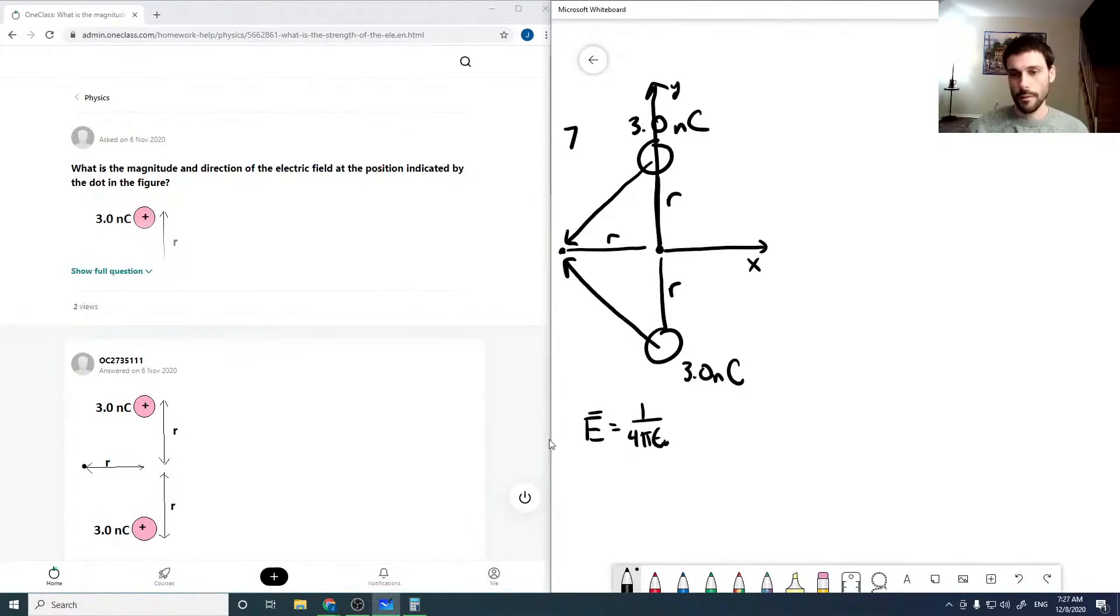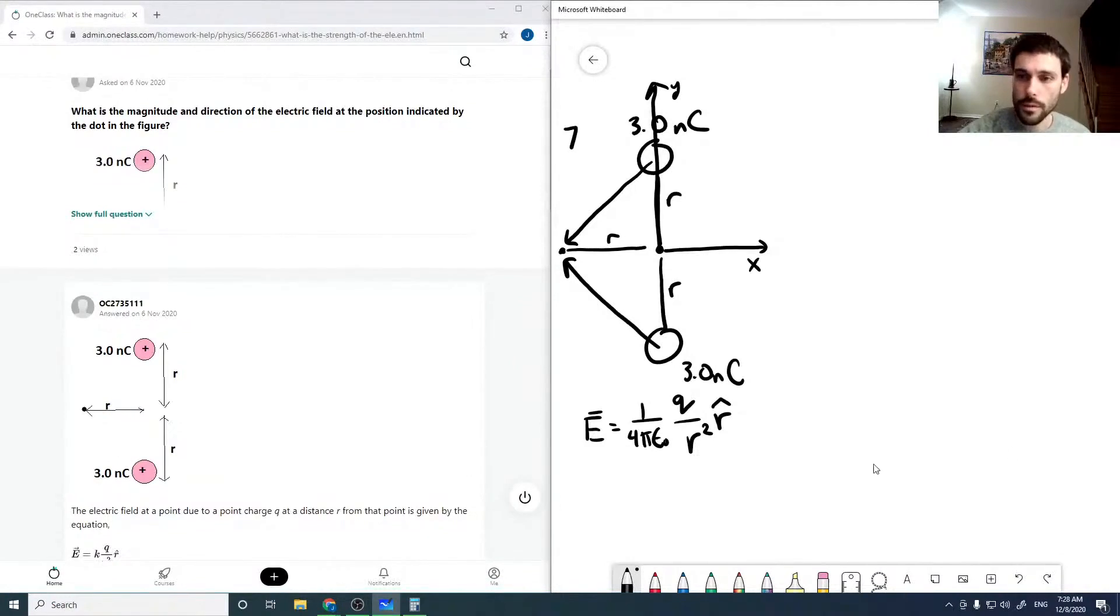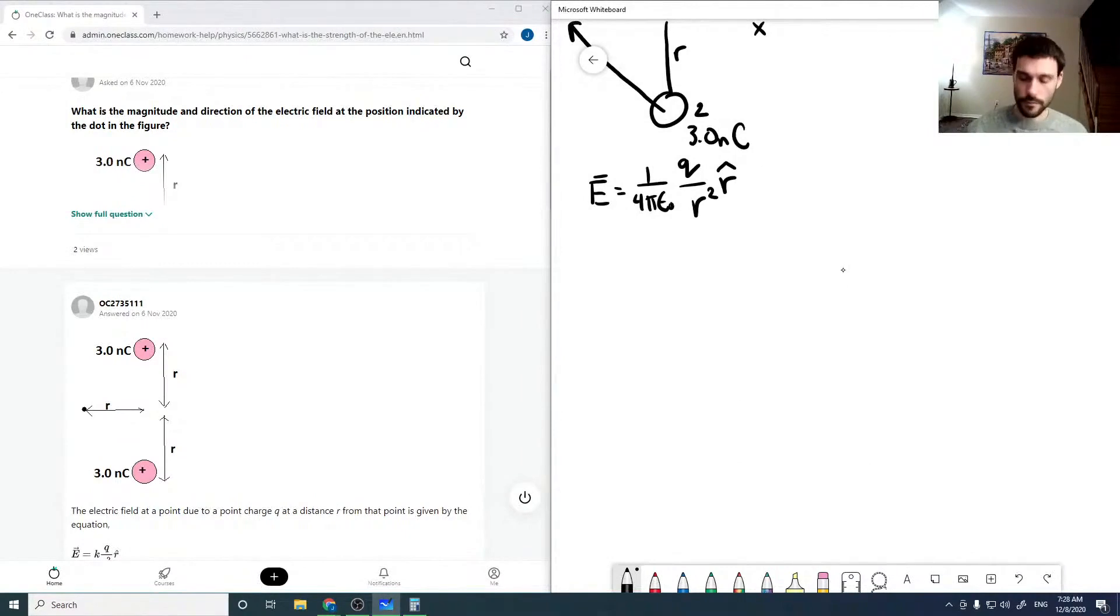Our electric field is given by one over four pi epsilon not, the charge over the distance squared, times r hat, r hat being the unit vector in the direction. We have two charges, one and two, so we can get two electric fields and then our total would be the sum.